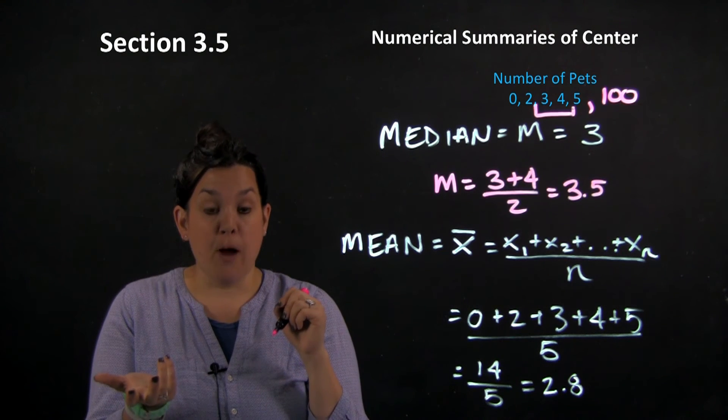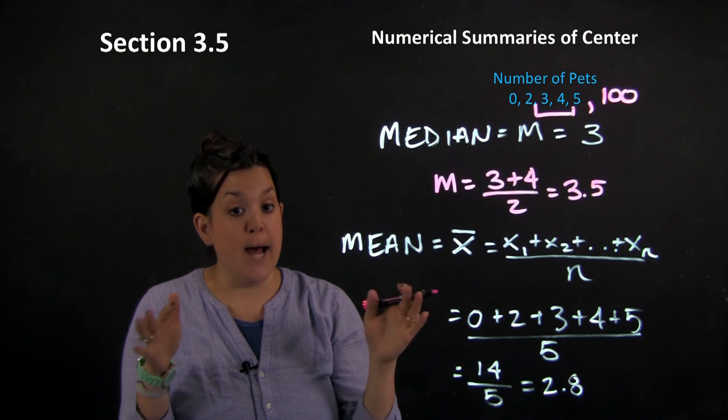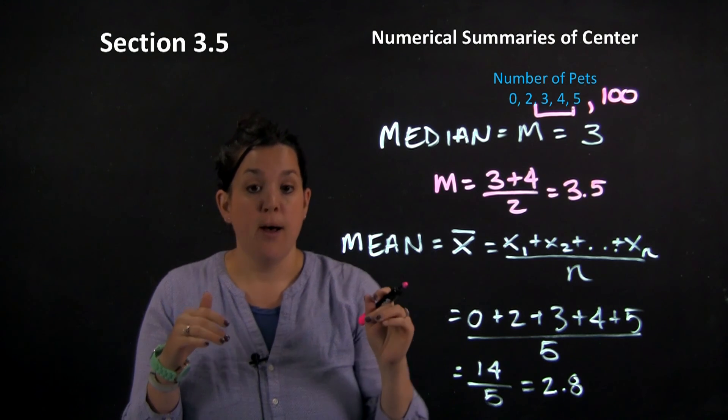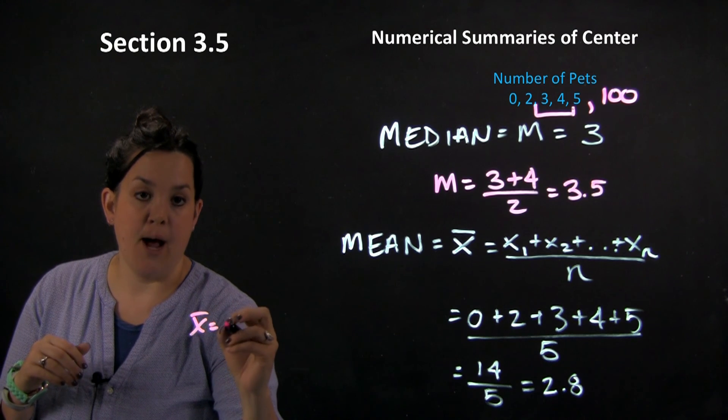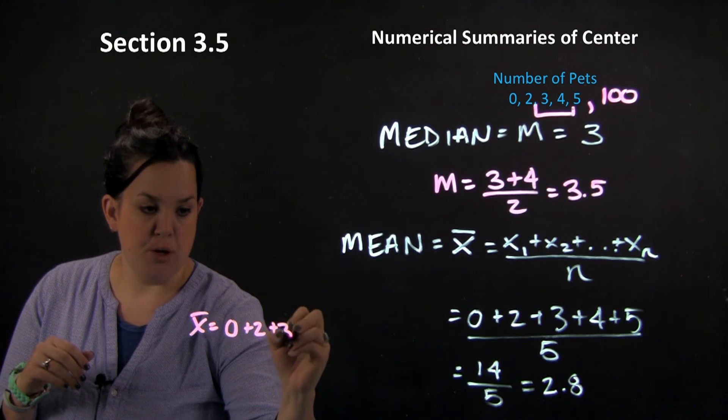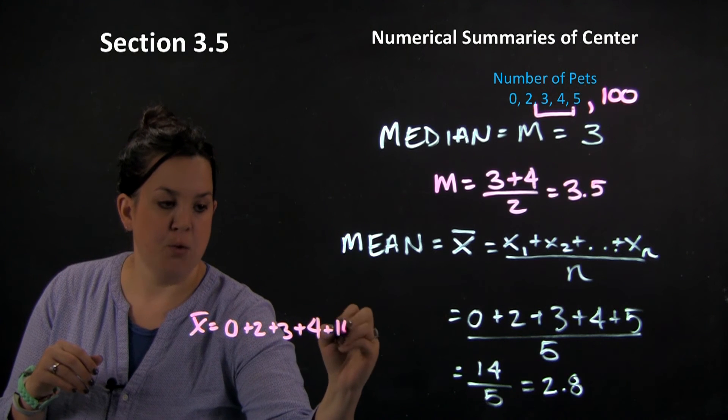So now, if I were to find the mean, I'm going to still add all of my observations, but I want to show you what happens when you do that and an outlier is present. So we have 0, 2, 3, 4, and 100.